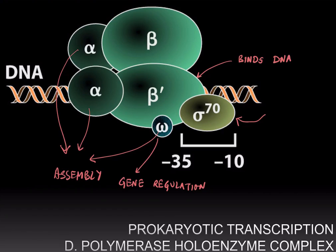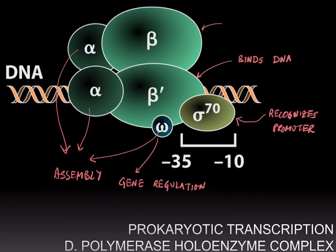Sigma 70, which is a 70 kilodalton protein — hence the name Sigma 70 — is the one that recognizes the promoter. Finally, the beta subunit is the one that has catalytic activity, which is to say that the beta subunit is the one that carries out the chain elongation reaction.